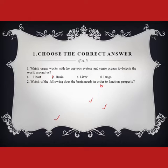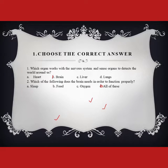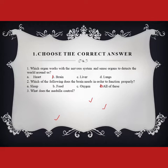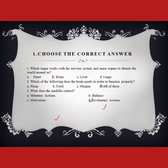Question number two: Which of the following does the brain need in order to function properly? The options are sleep, food, oxygen, or all of these. The brain needs all of these, so the answer is 'all of these.' Question number three: What does the medulla control — voluntary action, balance, motivation, or involuntary action?